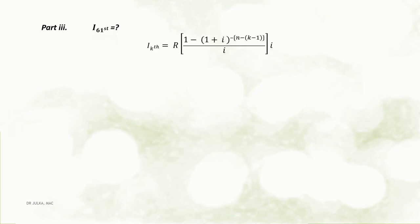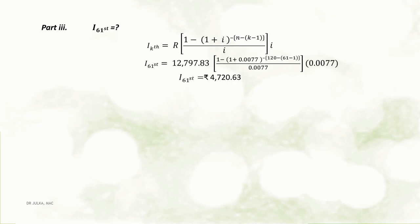Part 3: Here we want to calculate interest contained in the 61st payment. Interest contained in the kth payment is calculated using the formula: R multiplied by [1 minus (1 plus i) raised to the power minus (n minus k minus 1)] divided by i, and the whole multiplied by i. Putting R = 12,797.83, i = 0.0077, n = 120, and k = 61, after calculation we get the interest in the 61st payment as Rs 4,720.63.